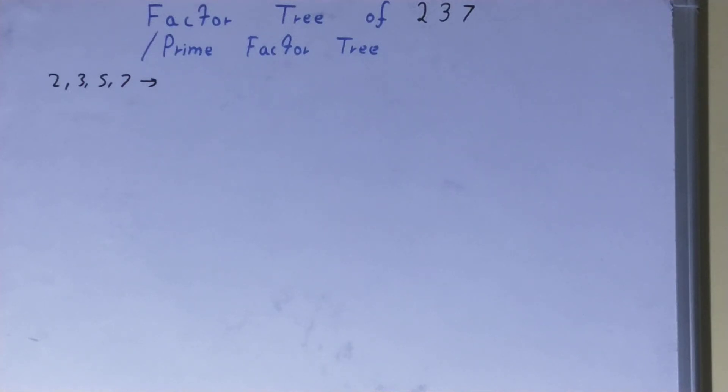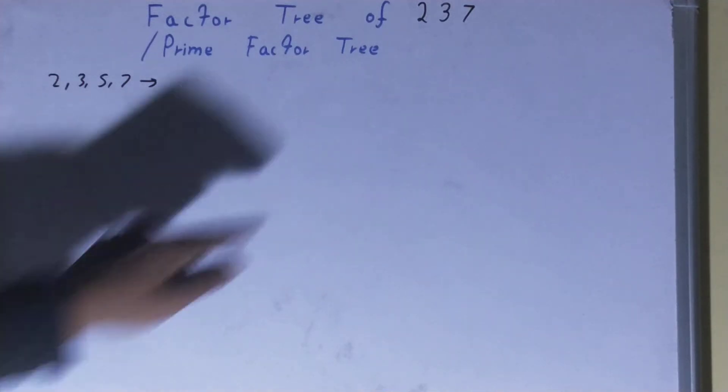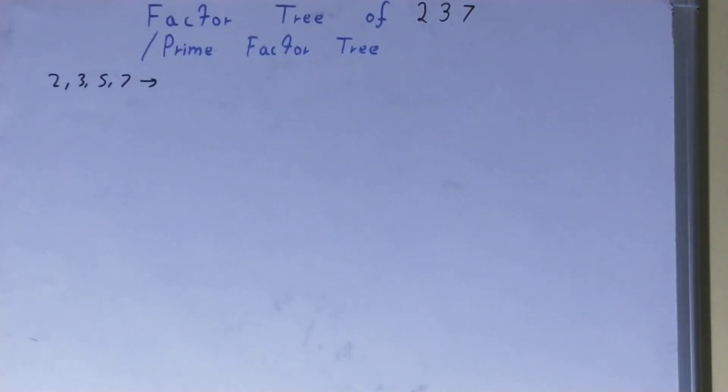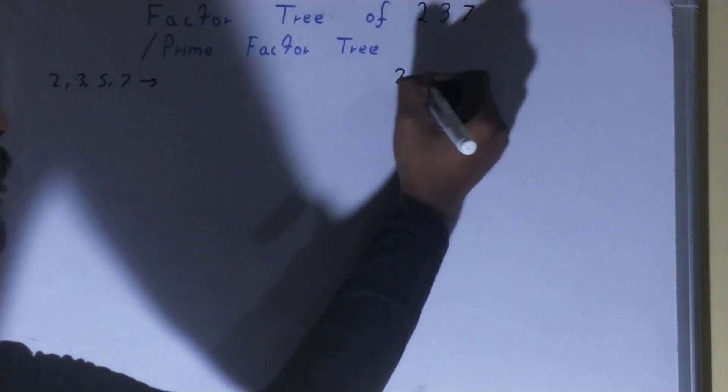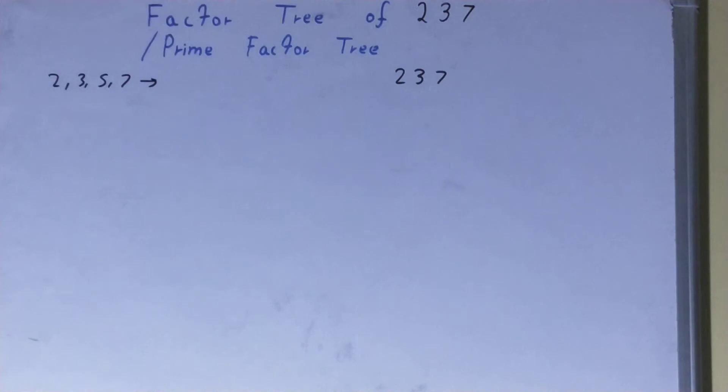Hello friends, and in this video I'll be helping you with the factor tree of the number 237. So let's start. To find it out, you need to write the number like this. And before solving this, you must know that the ending nodes or the terminating nodes of a factor tree are made up of prime numbers like 2, 3, 5, 7, and so on.